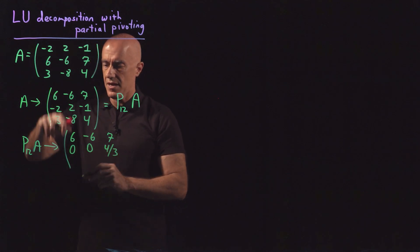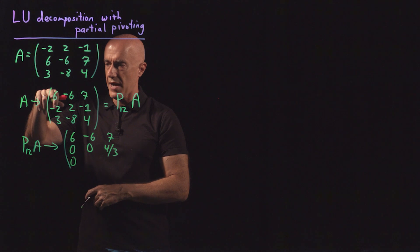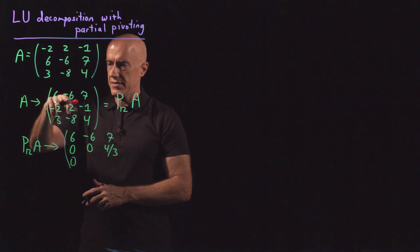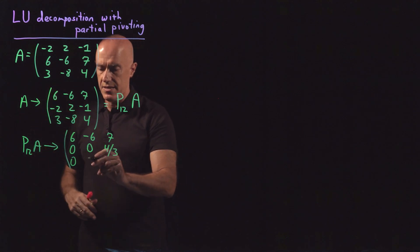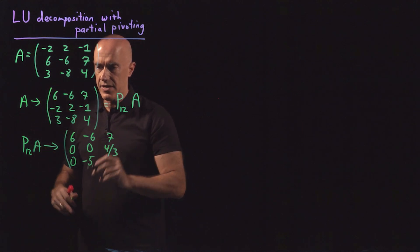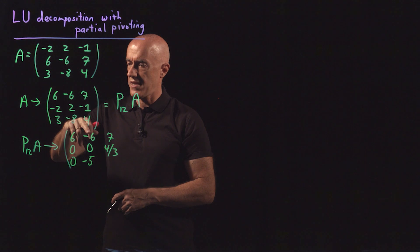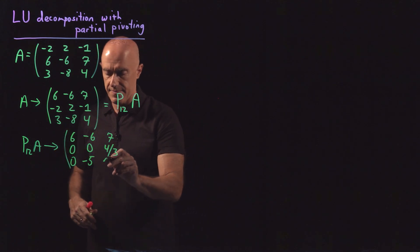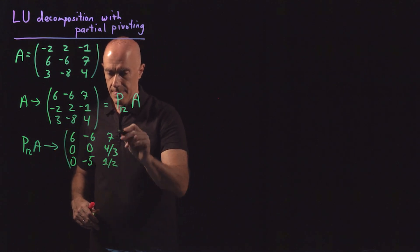And then we get a 0 here. So we're dividing through by minus 2 and adding. So minus 6 divided by minus 2 is plus 3 and add. So we get minus 5 here. 7 divided by minus 2 is minus 7 halves plus 8 halves is 1 half.